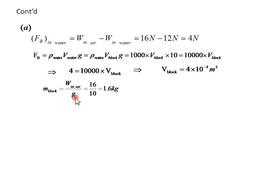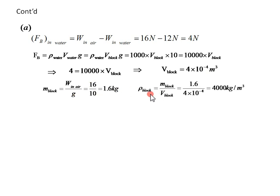Mass of the block is calculated from weight in air by dividing by G: 16 divided by 10 gives 1.6 kilograms. Therefore, density of the block is mass of the block over volume of the block, which is 4000 kilograms per cubic meter.